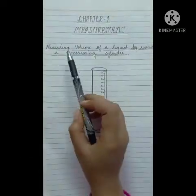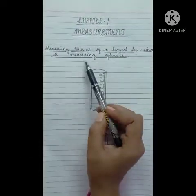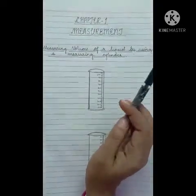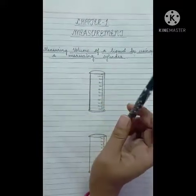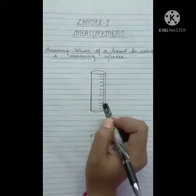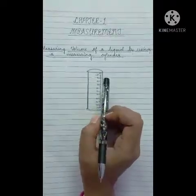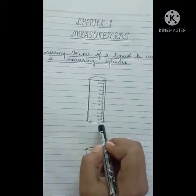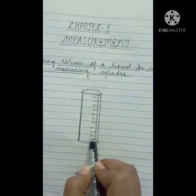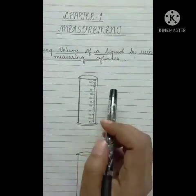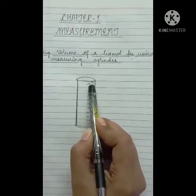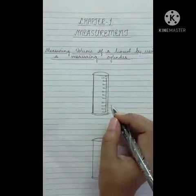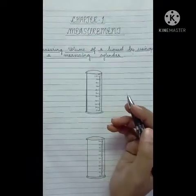Now the next topic is measuring the volume of a liquid using a measuring cylinder. Measuring cylinders are containers made of glass or plastic with calibrations on the wall, graduated in milliliters. As you can see, zero is marked at the bottom and 100 is marked at the top. They are generally used in laboratories to measure the volume of a given liquid.